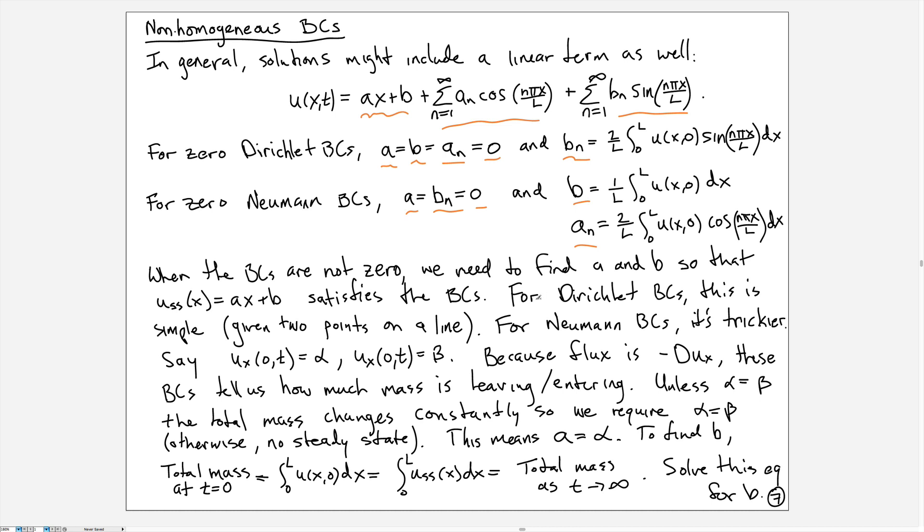What I'm saying here applies equally well to the zero cases, but those are a little bit simpler. When the boundary conditions are not zero, we need to figure out values of a and b so that the steady state satisfies the boundary conditions, and then the additional pieces, either the cosine terms or the sine terms, allow us to build a Fourier series to match the initial condition.